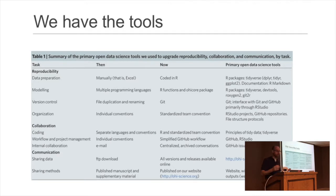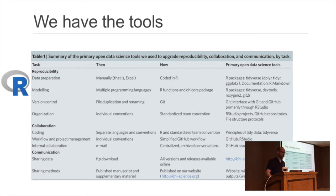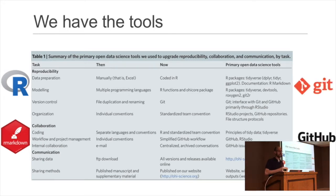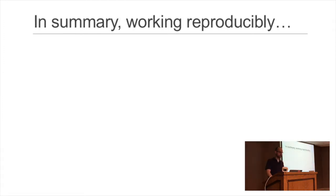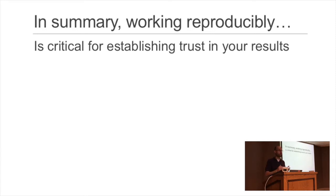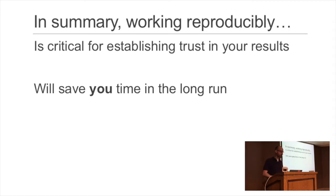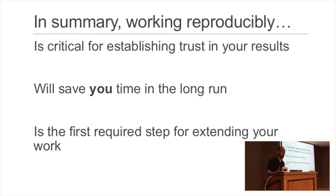Something that has changed in the last few decades is that there are a lot more tools available to the average scientist or R programmer to work more reproducibly. This is nicely exemplified in a review by Lowndes and colleagues, where they documented how they tried to implement a more reproducible workflow as a team of scientists. R was a big part of that, along with R Markdown, Git, and GitHub. Working reproducibly is critical for self-existing trust in your results, will save you time in the long run, and is the first required step if you or someone else is going to extend your work.